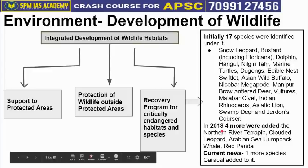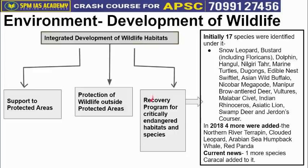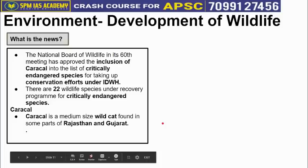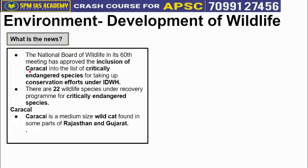Now the current news: one more species, Caracal, has been added, making the total 22 species under the Recovery Program for Critically Endangered Habitats and Species. 17 were there at the start, 4 more were added in 2018, and 1 has now been added. The National Board of Wildlife in its 60th meeting has approved the inclusion of Caracal to the critically endangered species list for conservation efforts under Integrated Development of Wildlife Habitat.